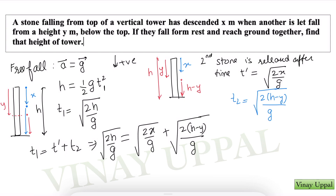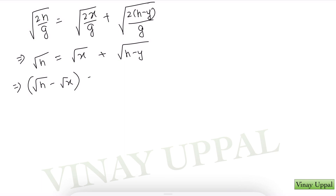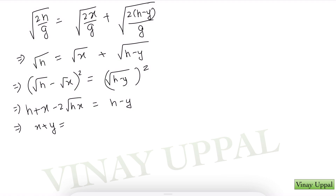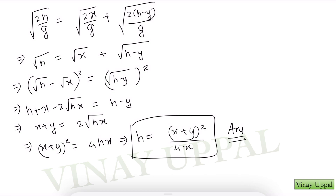Rearranging and squaring: H + X − 2√(HX) = H − Y, so X + Y = 2√(HX). Squaring again gives the height of the tower as H = (X + Y)² / (4X). That is the answer — I hope you understood how we solved this free fall question.